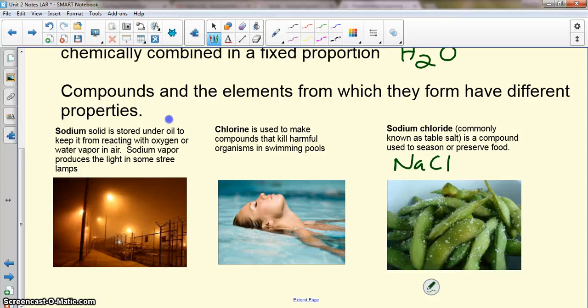Sodium is a highly reactive metal that is so reactive we can't store it in air or it would react with the oxygen and water vapor. Chlorine is a fairly toxic chemical we use as a disinfectant and it helps kill harmful organisms in swimming pools. So two very reactive, fairly toxic chemicals.